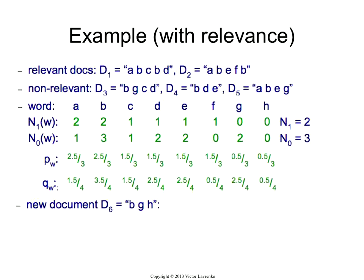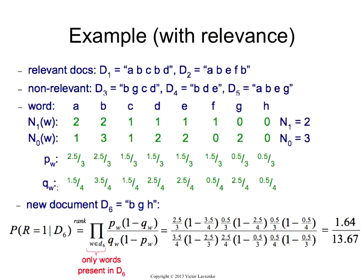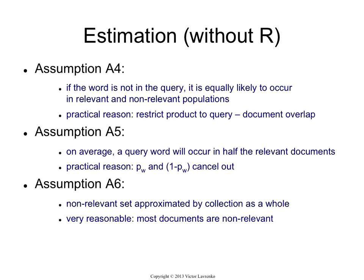So probabilities for the non-relevant class, the qw's. Now if I get a new document, bgh, this is how you would compute the probability of relevance for that document. These are my pw's and qw's. And I do the product only over the terms in the document. Remember, we fought a lot to get it to this form. That's what all the previous slides are about. So we have a product that goes over the words in D6. You just put these numbers in there, and you get some quantity. So that would be the probability of relevance given D6.